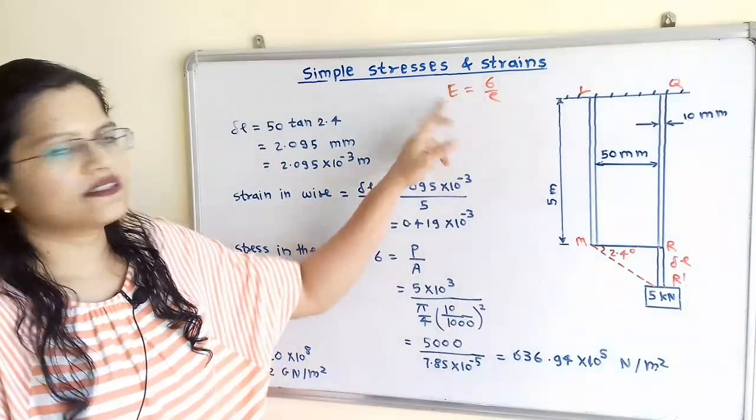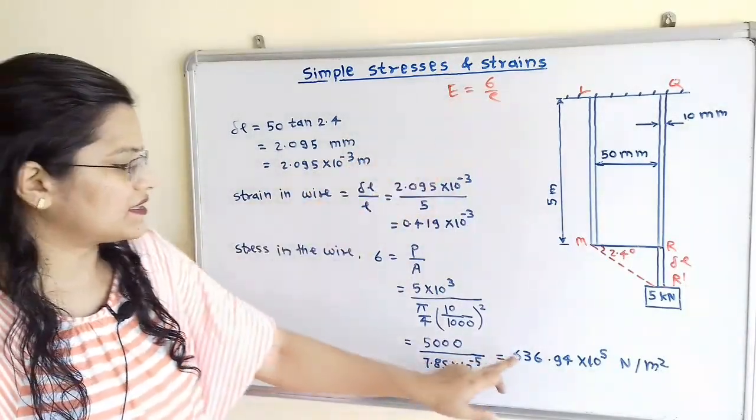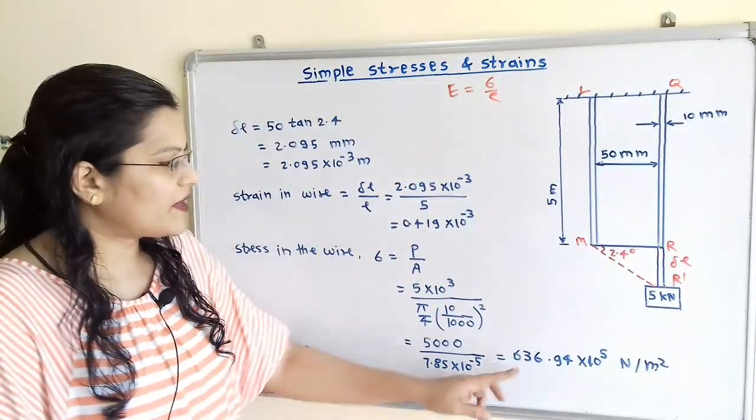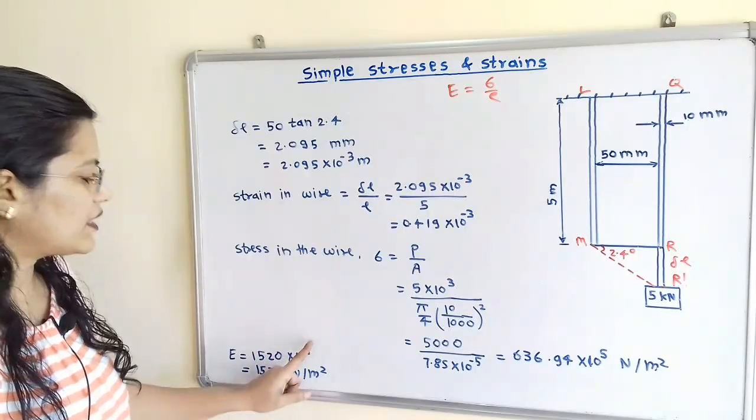Now we will calculate the Young's modulus. So it is stress by strain. That is this term divided by this term. Now when we calculate, then we will get 1520 into 10 raised to 8.